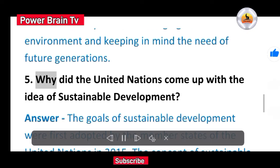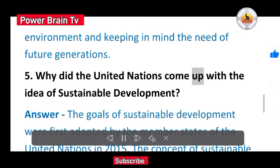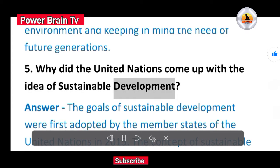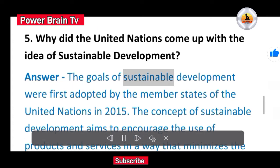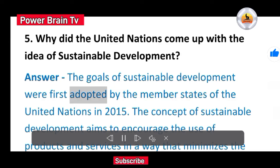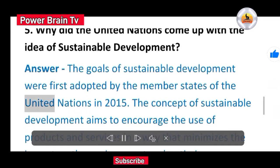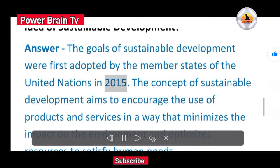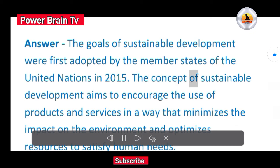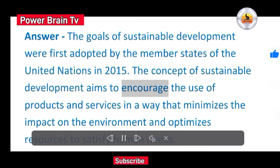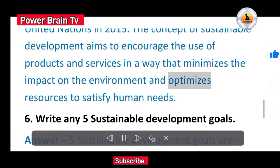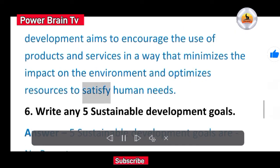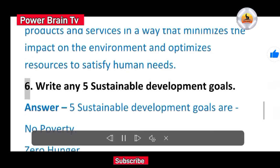5. Why did the United Nations come up with the idea of sustainable development? Answer. The goals of sustainable development were first adopted by the member states of the United Nations in 2015. The concept of sustainable development aims to encourage the use of products and services in a way that minimizes the impact on the environment and optimizes resources to satisfy human needs.